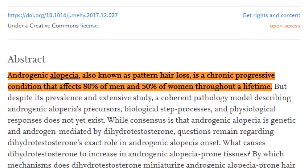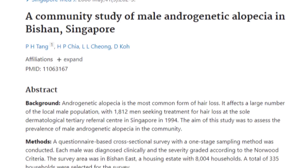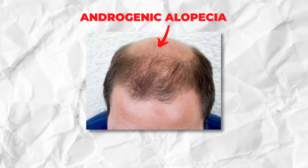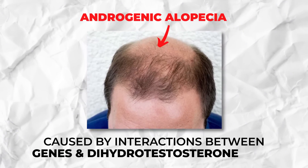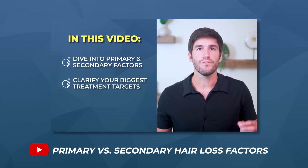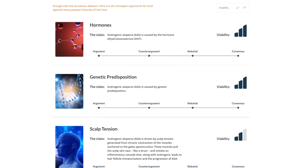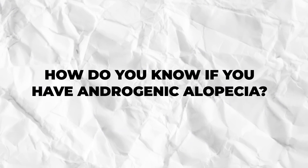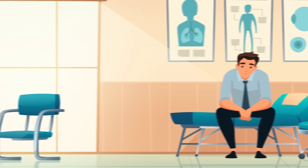Some studies show that given the prevalence of androgenic alopecia, if you live long enough, the odds of it affecting you are close to 100%. According to the best research so far, androgenic alopecia is caused by interactions between our genes and the hormone dihydrotestosterone, or DHT. For more detail, check out our video on the primary versus secondary factors of hair loss. So how do you know if you have androgenic alopecia? Go to a dermatologist and get a diagnosis — that's really the only way to know, and it applies to all hair loss types discussed in this video.